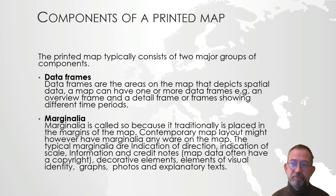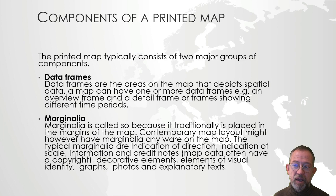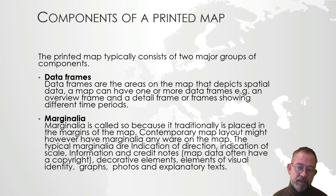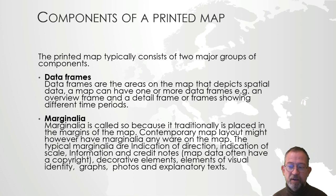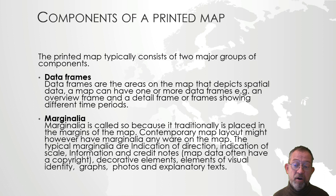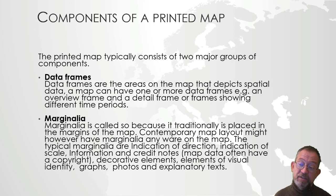When we start talking about how we're going to design the graphics of a map, we have two key elements. We have the data frame — that's where we have visualized our data. And then we have the marginalia — that's all the things that are around it, which is why it's called marginalia, because it is in the margins. Things like scale bars and legends are all part of the marginalia. They are part of the final map and are crucial to the design, but they are not part of the data frame. There might also be things you have to include, such as copyright or information about the source of the data.